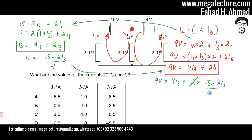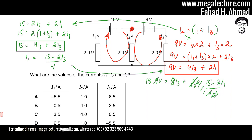After canceling and multiplying everything by 2, this becomes 18 = 8i3 + (15 − 2i3), where the 2s cancel out. Simplifying this expression further, I combine the i3 terms.